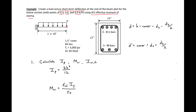Our first step is to calculate I-gross, M-cracking, and I-crack transformed. I-gross can be found simply as b, which is 14 inches, times h, 21 inches, to the third, divided by 12. This gives us an I-gross of 10,805 inches to the fourth.